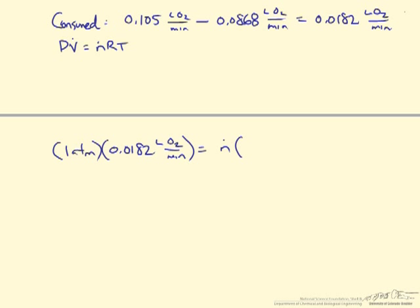On the right side, we are looking for an unknown flow rate. We will use the appropriate gas constant, in this case 0.08206 liters atmosphere per mole kelvin. And then an absolute temperature. If you recall, it is 21 degrees Celsius. So 273 plus 21 degrees Celsius will give us our absolute temperature in kelvin.